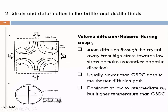Let's now discuss volume diffusion, also called Nabarro-Herring creep. This is a process similar to grain boundary diffusion creep, only that the atoms or vacancies move not along the grain boundary but through the volume, internally through the crystal structure.